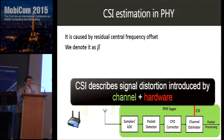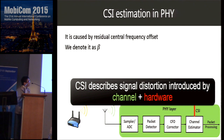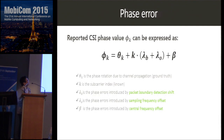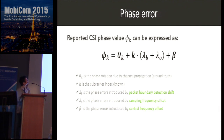The phase of the CSI actually contains two parts: the first is contributed by the wireless channel, and the second by the hardware. We want to accurately estimate the phase change caused by the channel and eliminate the phase change caused by the hardware. The reported CSI phase value can be represented by an equation where theta_k is the phase change caused by the wireless channel, and the other parts are introduced by the hardware.